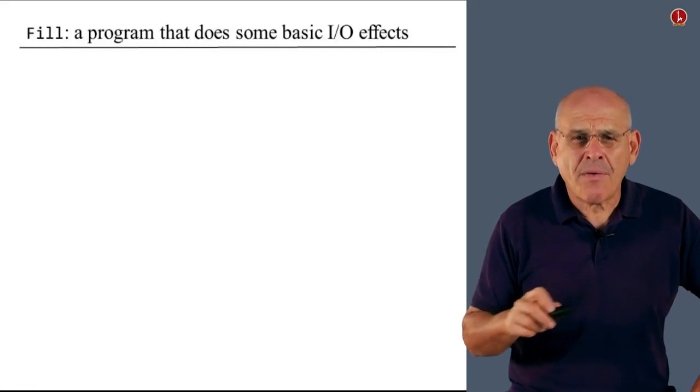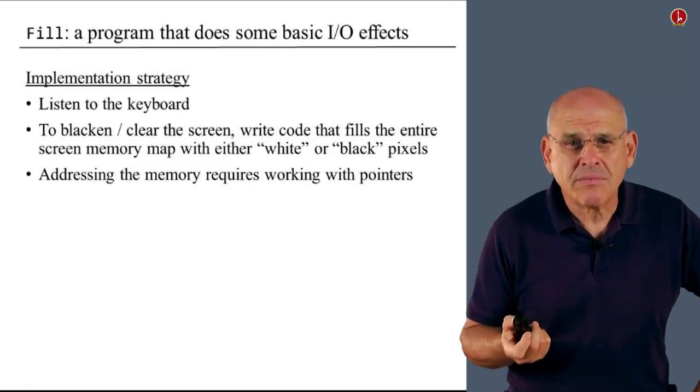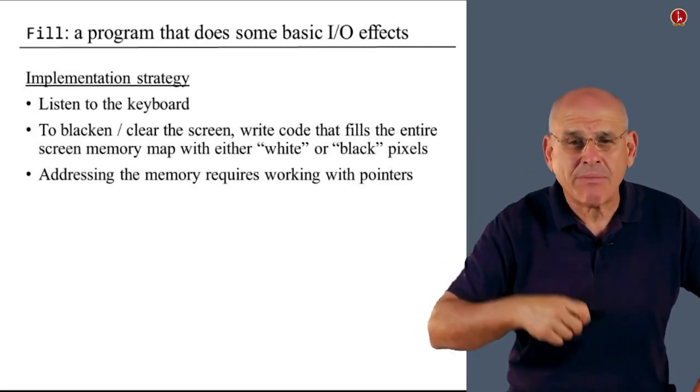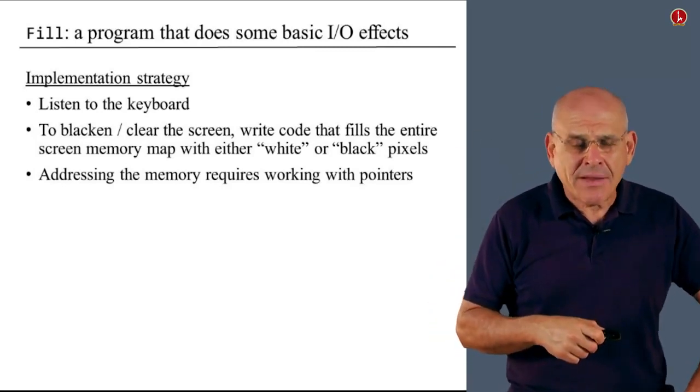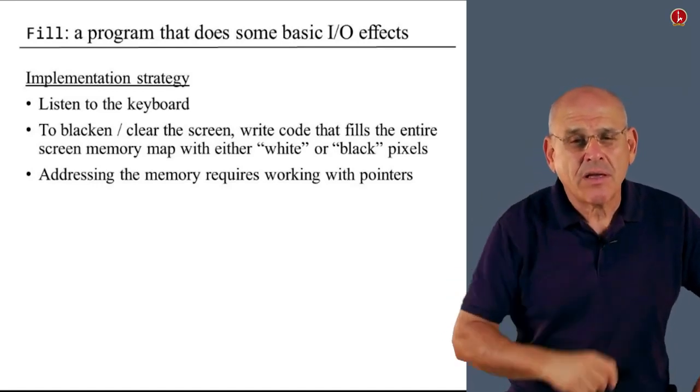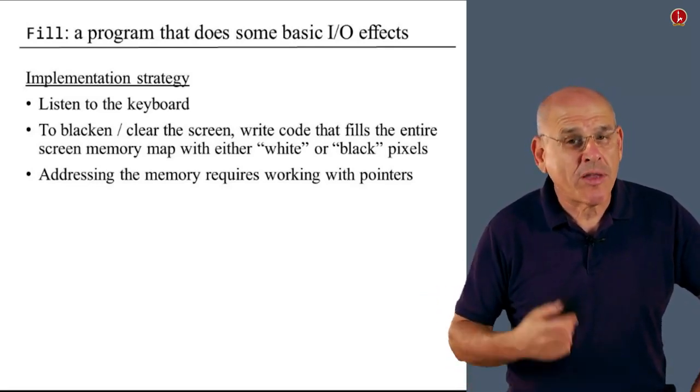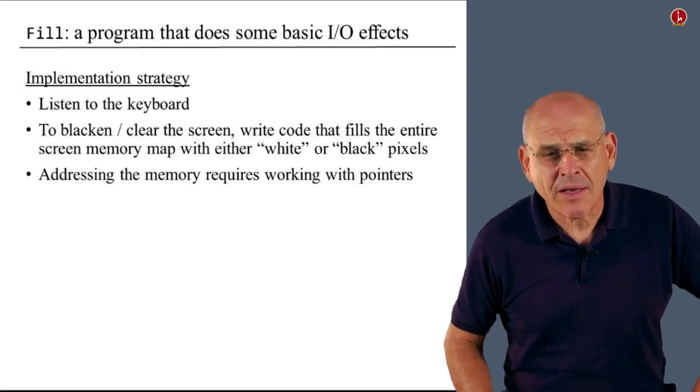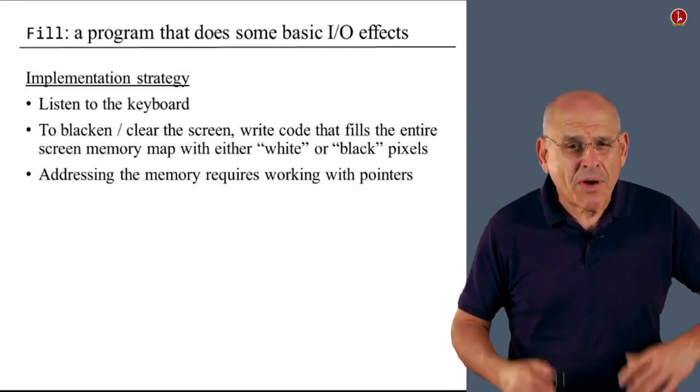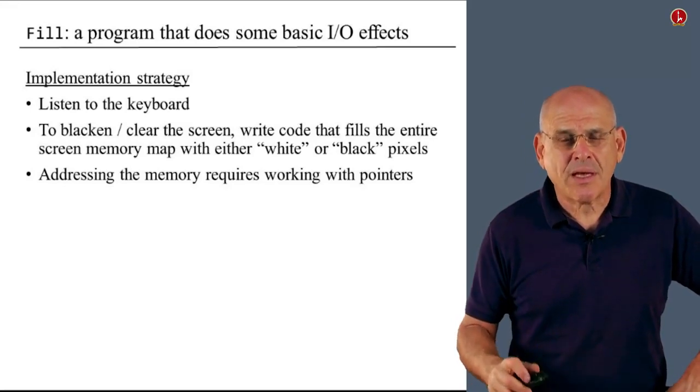All right, so here is the general implementation strategy. Listen to the keyboard, to blacken or clear the screen. We write code that fills the entire screen memory map with white or black pixels. And in order to do this, we have to address every register in the memory map. And we do it using some sort of a loop that works with pointers, in a very similar way to what we did in the previous unit when we discussed pointers manipulation. So you really have all the firepower that you need in order to implement this particular program.